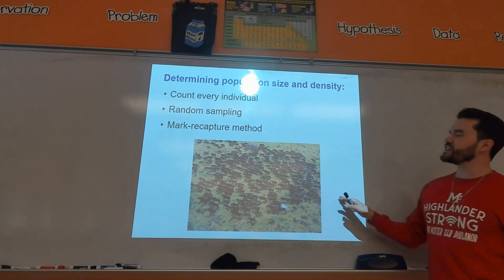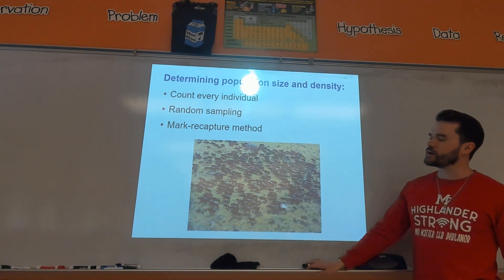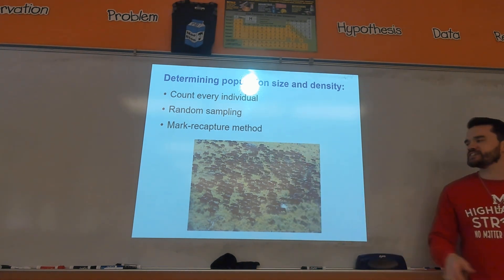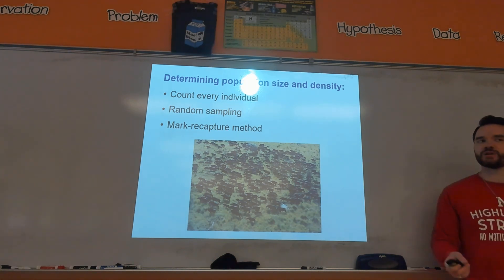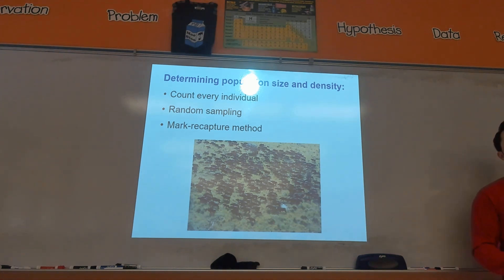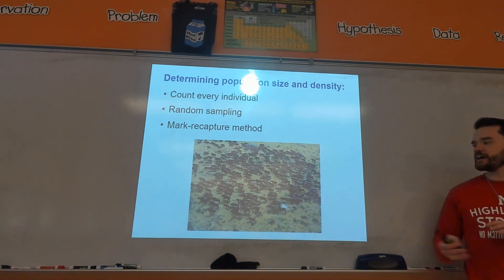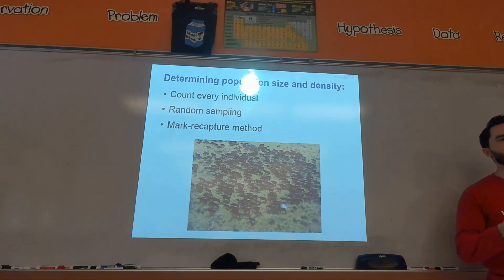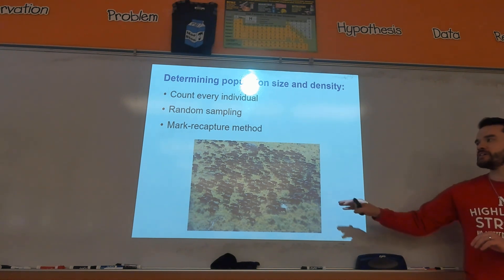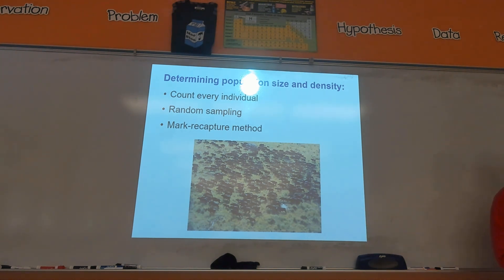There's another interesting method called mark and recapture. You essentially mark one of the wildebeest — or whatever you're trying to count — and then recapture it later. Based on the number that you recapture versus how much time you have to do the recapturing, that can be calibrated to figure out the population size or to track a population over time.